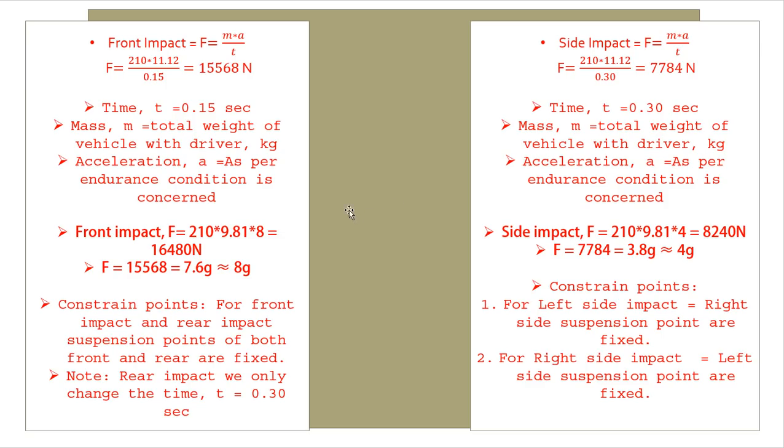For front impact it is 0.15 seconds. Front impact in terms of g: 210 times 9.81 times 8 equals 16,480 Newtons, approximately. What we have got is 15,568 Newtons, which is approximately 7.6g. We can take approximately 8g for front impact.